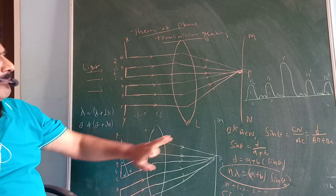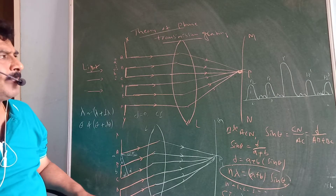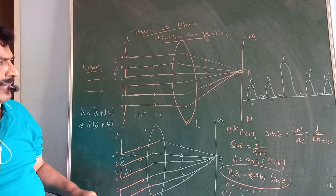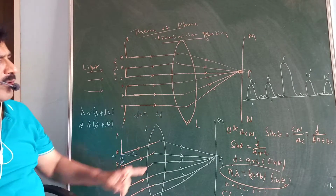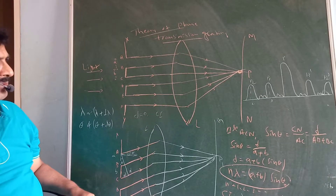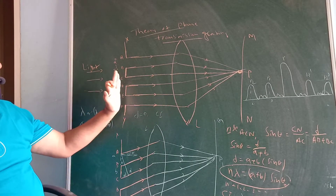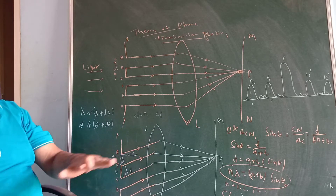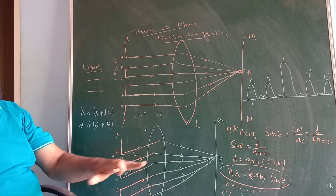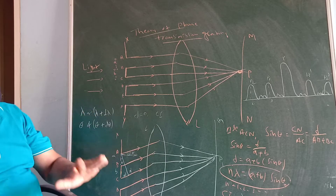L is the achromatic converging lens. MN is the screen placed at the principal focus of the converging lens L. This grating, lens, and screen are placed perpendicular to the plane of the paper, or perpendicular to the plane of the board or ground.